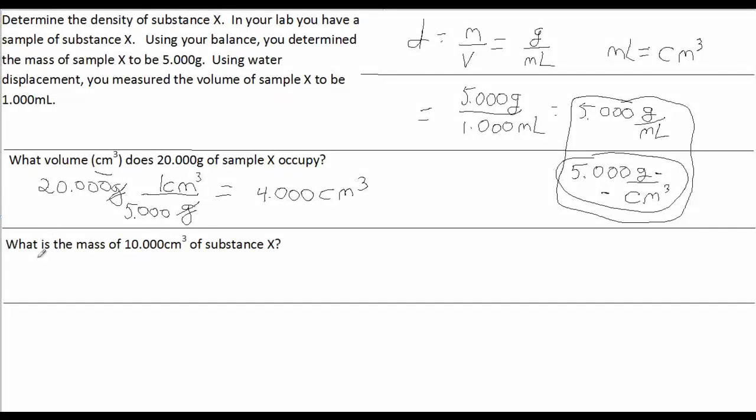One final problem, using density as a conversion factor, is to determine the mass of a substance given a volume. In this case, if we're given 10 cubic centimeters of substance X, we're asked to determine the mass. We can use dimensional analysis to start us off. 10.00 cubic centimeters. And I immediately write cubic centimeters in the denominator.